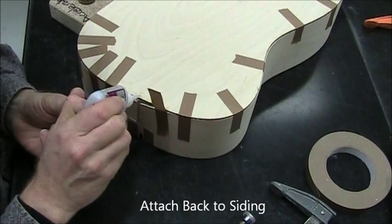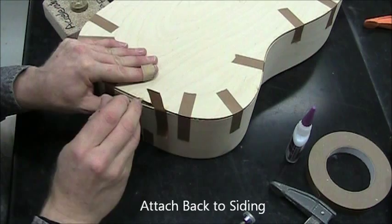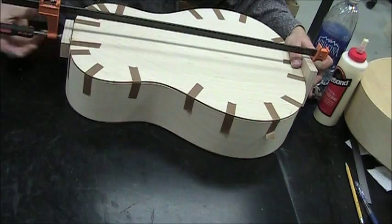The glue is going between the siding and the block, not between the siding and the back. Accelerator, so I don't have to clamp that. Or just clamp it with your finger for a minute.